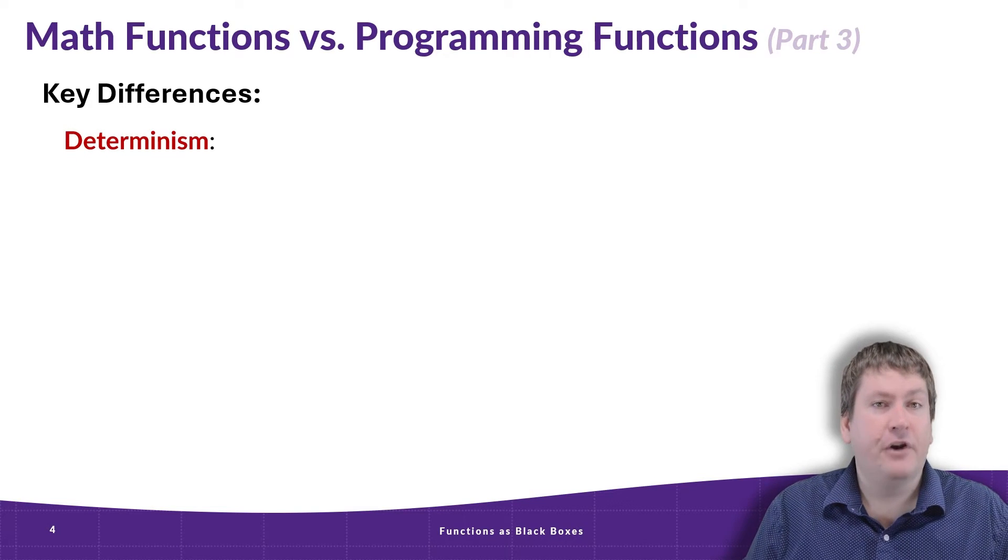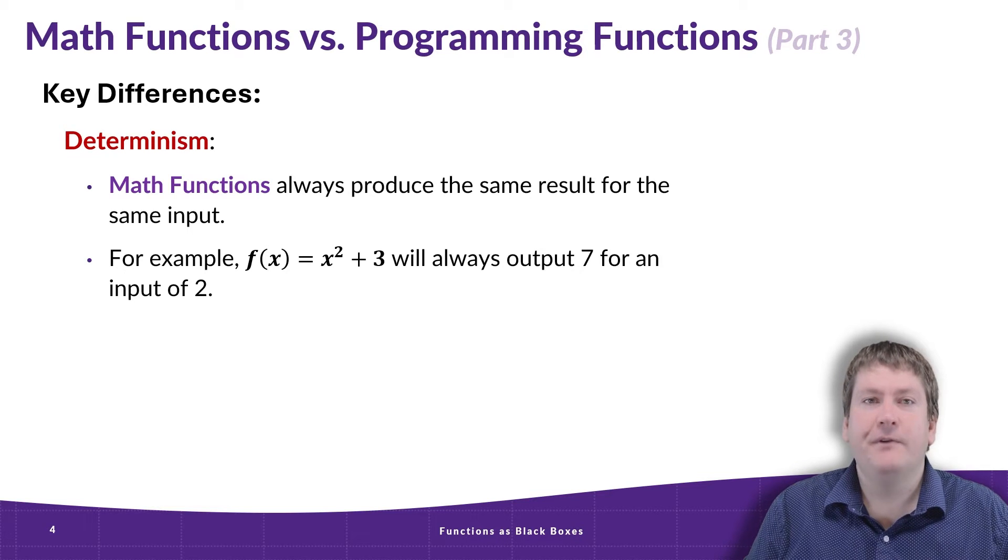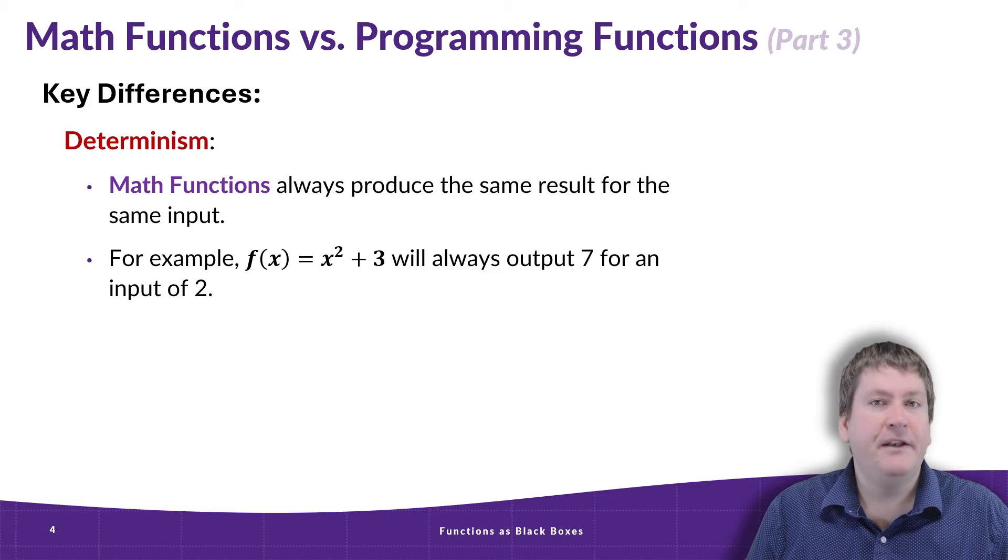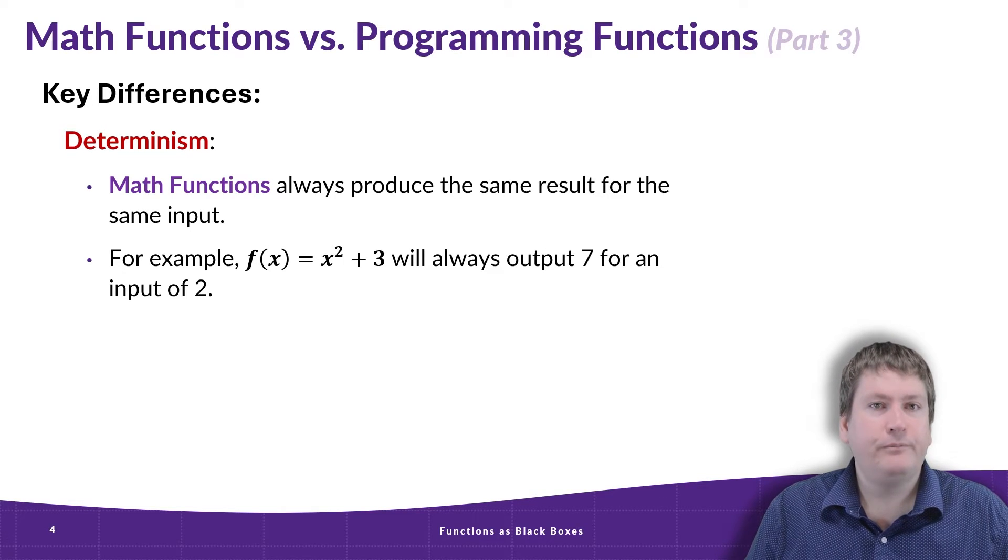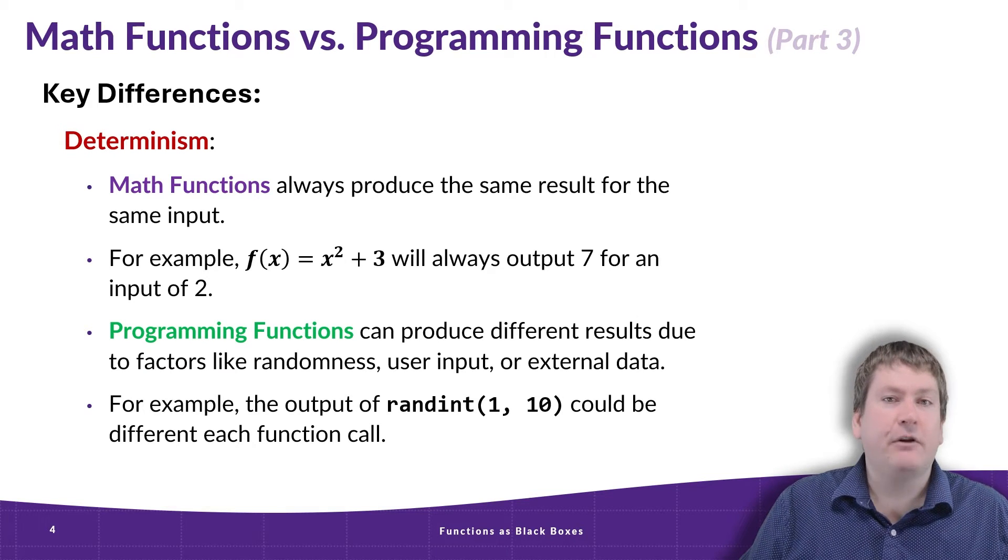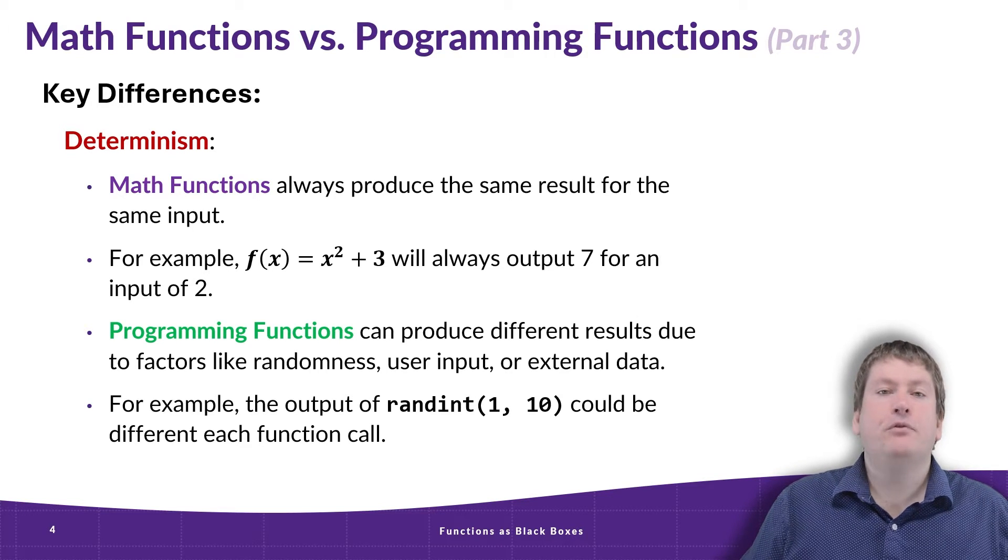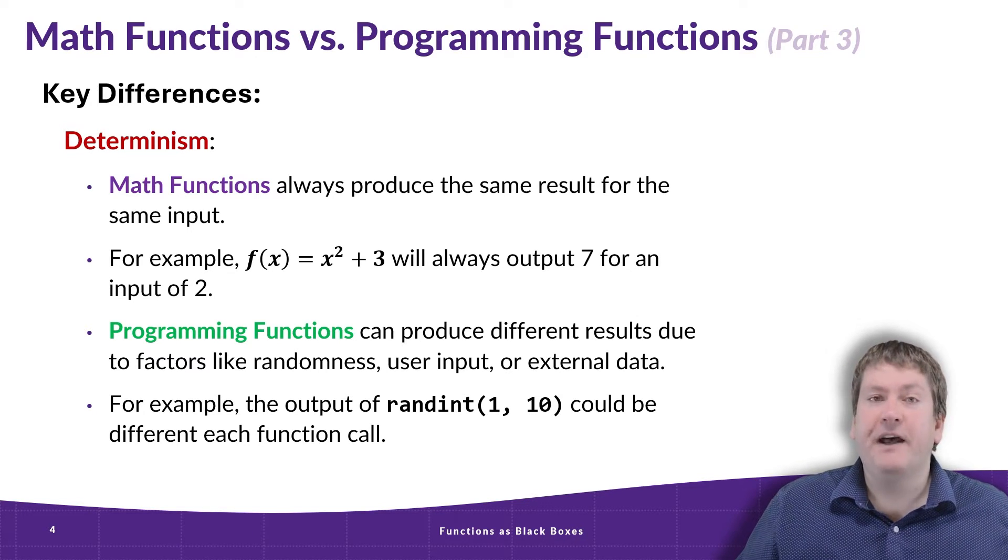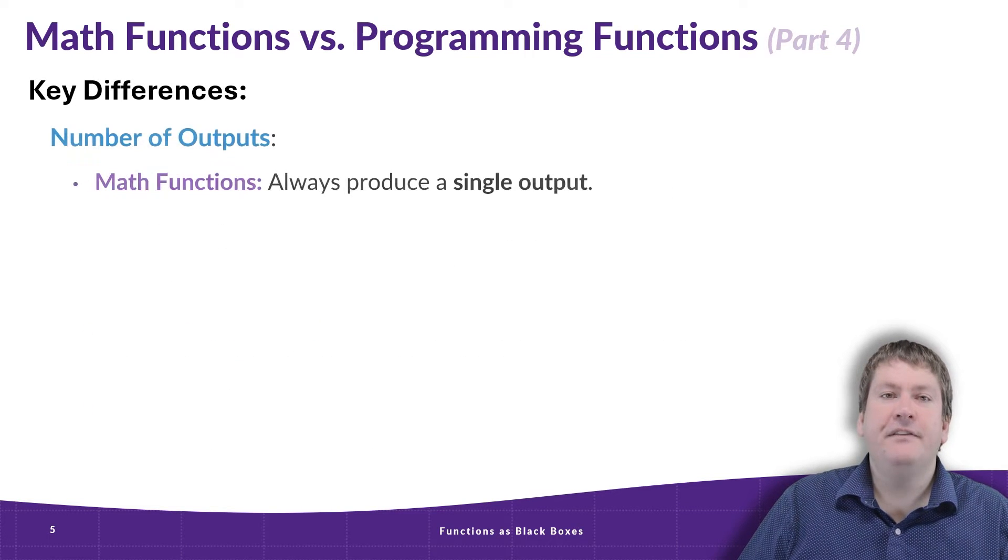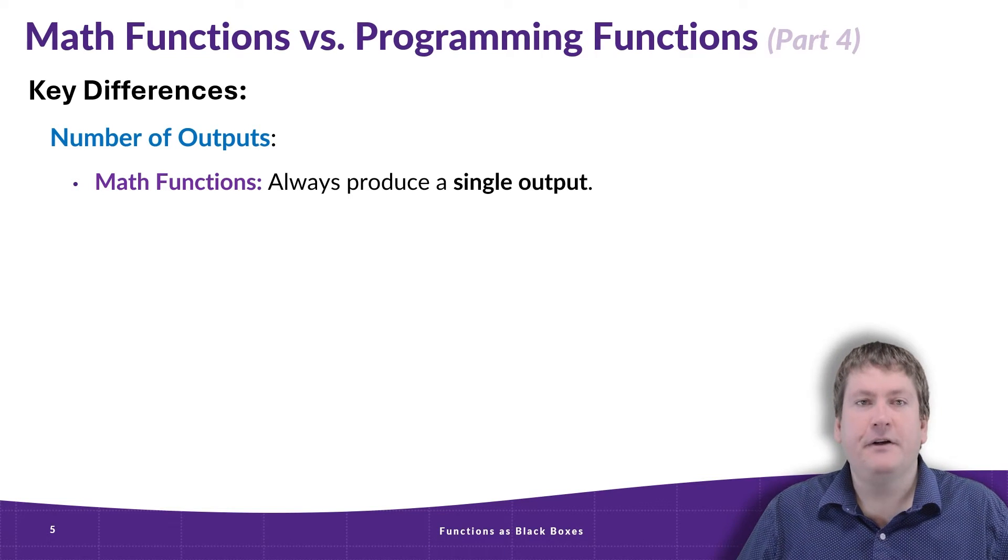So what are the key differences here? Well, first one is determinism. Mathematical functions always produce the same result for the same input. We saw that example with x³ + 3 always produces a 7 for an input of 2. But programming functions can produce different results due to factors like randomness, user input, or external data. For example, the randint example we saw could produce a different value for each function call.